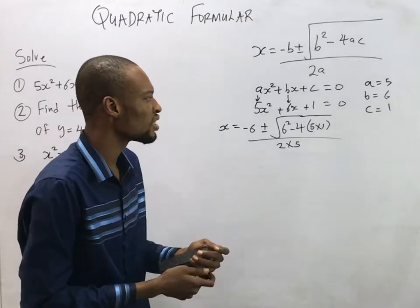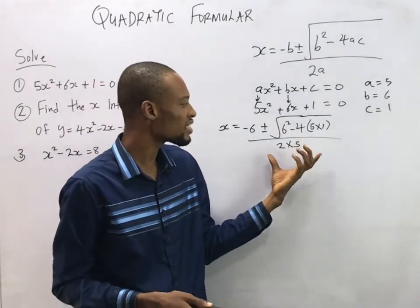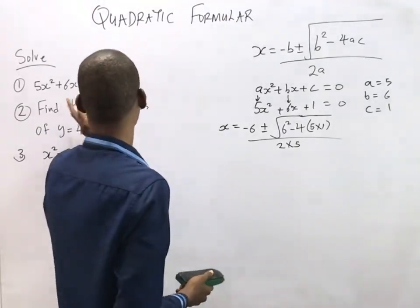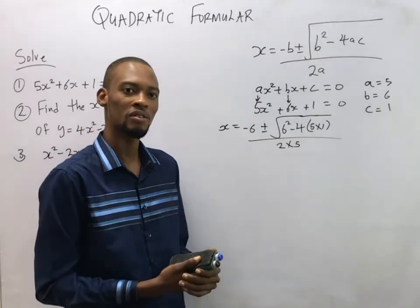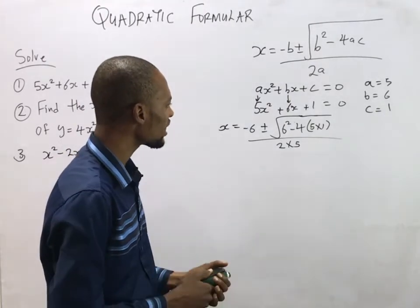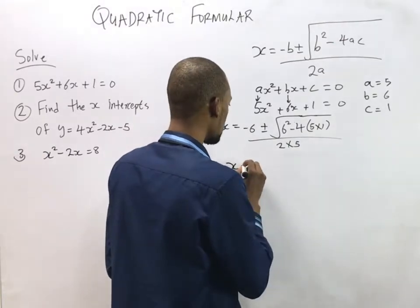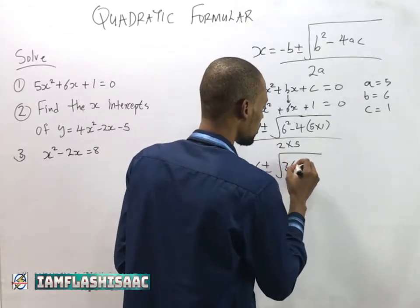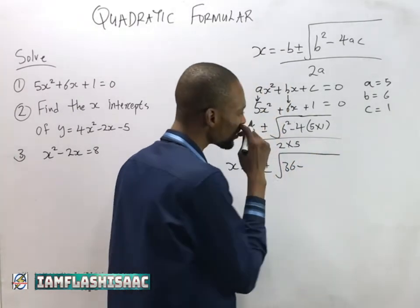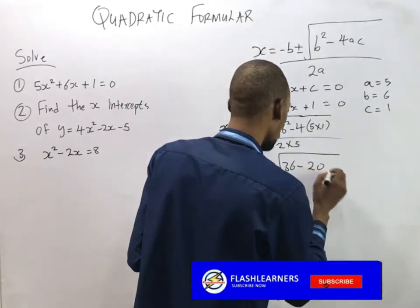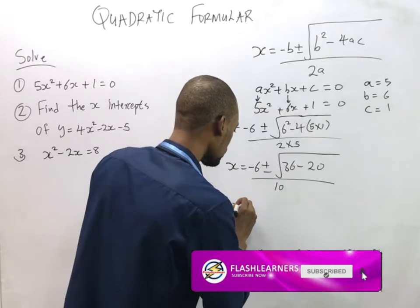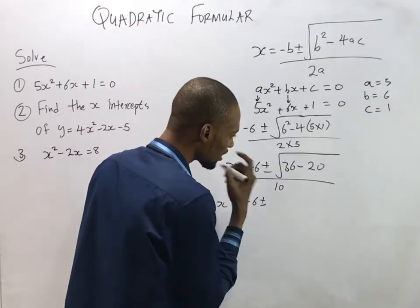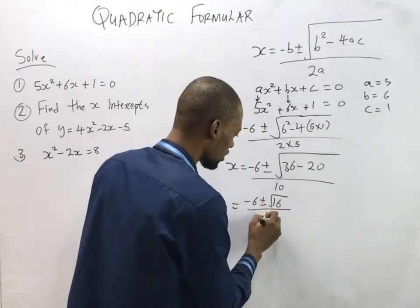With this step you are done — if you have a powerful calculator you can input everything and get the answer. But let's solve it manually. s equals minus 6 plus or minus the square root of: 6 squared is 36, minus 4 times 5 is 20, times 1, which is 20. So we have 36 minus 20, all over 10. That gives us minus 6 plus or minus the square root of 16, over 10.